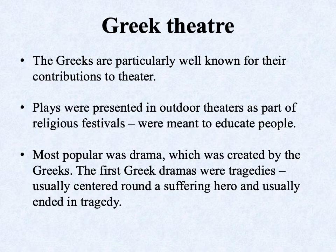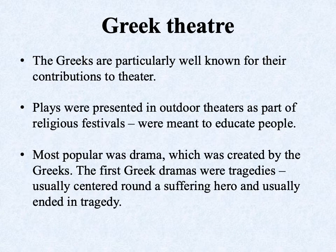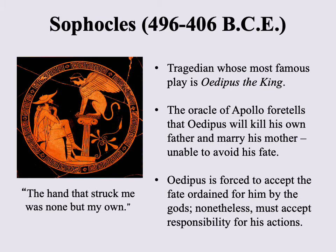Greek plays in terms of their structure would be somewhat familiar to us today. They took place in outdoor theaters, initially as part of religious festivals — not primarily for entertainment purposes, though over time that became a major aspect. Initially they were meant to educate people. The most popular kind of theater was drama, and how we think of the term 'drama' pretty much comes from the Greeks. The first Greek dramas were tragedies, which had very unhappy endings, a serious tone all the way through, usually centering around a suffering hero. A really good example is the playwright Sophocles, who lived between 496 and 406 BCE, probably most famous for his play Oedipus the King.